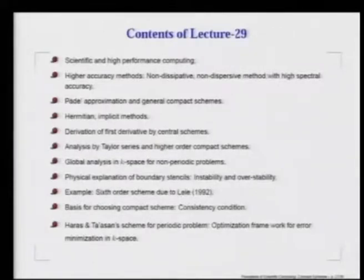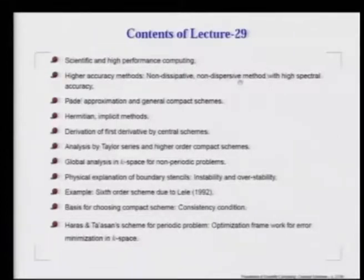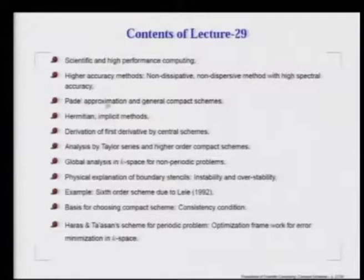In the process, we basically try to develop high accuracy methods, which will by itself be non-dissipative, non-dispersive, and which will have very high spectral accuracy. One of the candidate methods is basically a Hermitian implicit method, also known as the Padé approximation, that gives rise to what is called the general compact scheme. So, we are going to talk about compact schemes now onwards.